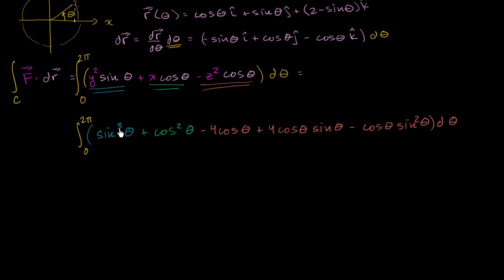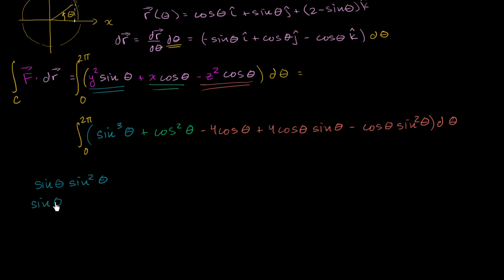We see sine cubed theta. There's no obvious way to directly take the antiderivative of sine cubed theta. But if we had some mixture of sines and cosines, we could start doing u-substitution, which at this point you can probably do in your head. So we write this as a product: sine of theta times sine squared theta. And sine squared theta can be rewritten as 1 minus cosine squared theta.